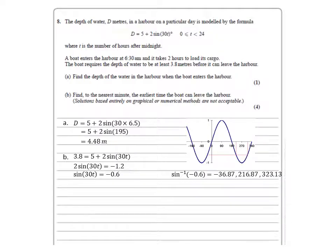So checking out these two answers, we get that 30t equals either 216.87 or 323.13. Dividing by the 30 gives us t values of either 7.229 or 10.771. Now the boat takes 2 hours to load its cargo so it can't leave before 8.30. So 7.229 is too small, hence the answer must be 10.771.